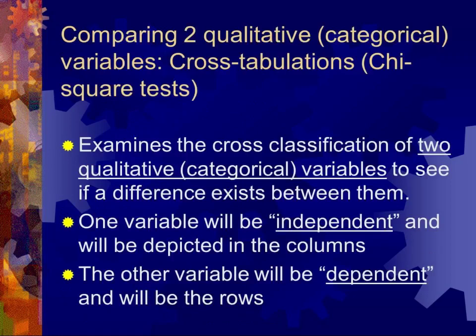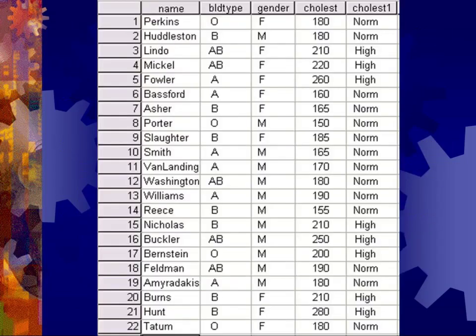So when do you use a chi-square test? Chi-square is used when you're comparing two qualitative or categorical variables. It examines the relationship or differences, if they exist, between two categorical variables through cross-tabulations. Usually one variable is referred to as the independent variable and placed in columns, and the other is called the dependent variable and is usually in rows — by convention in the literature for chi-square presentations.